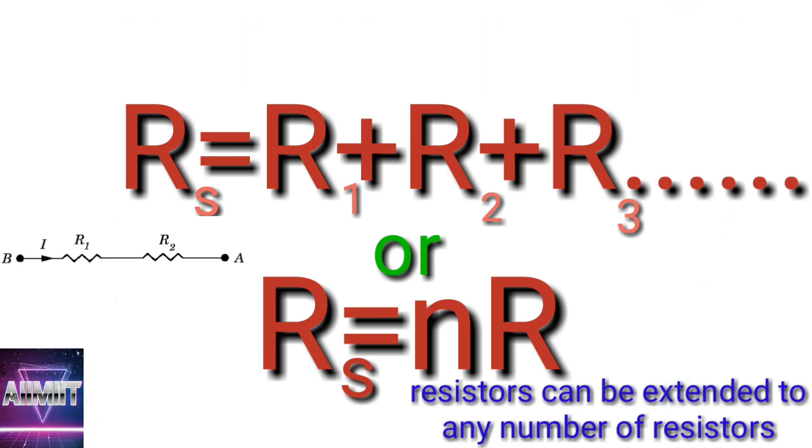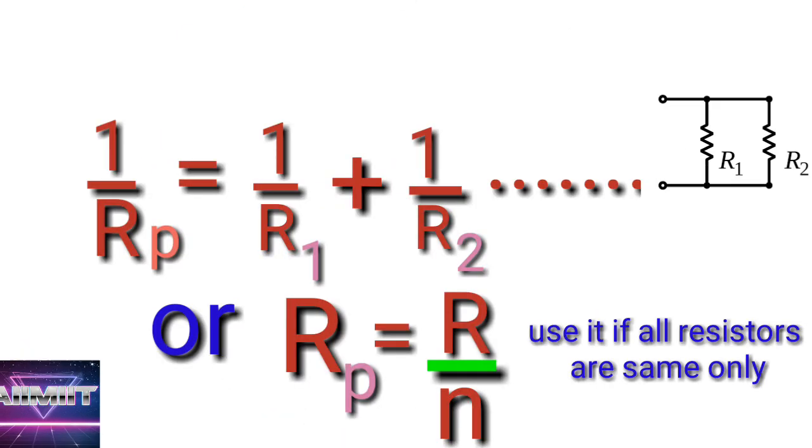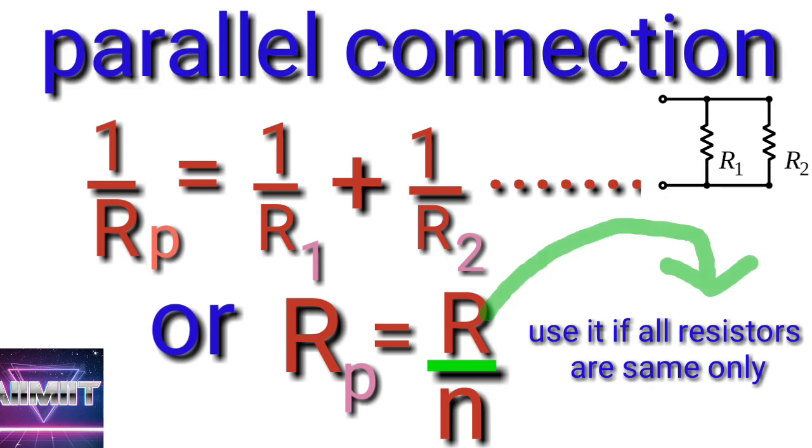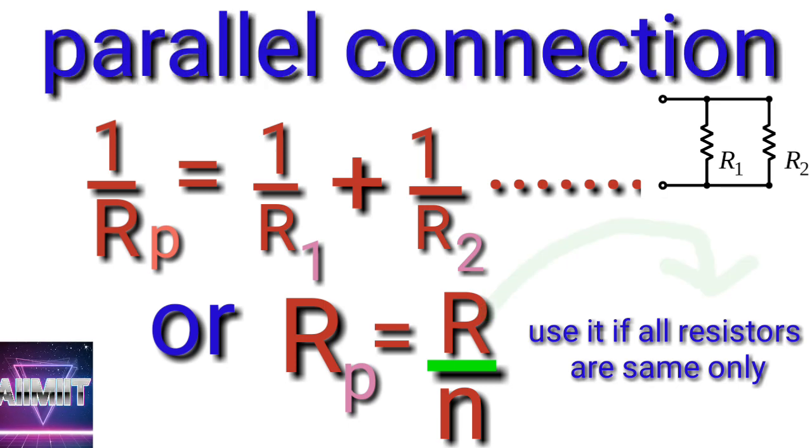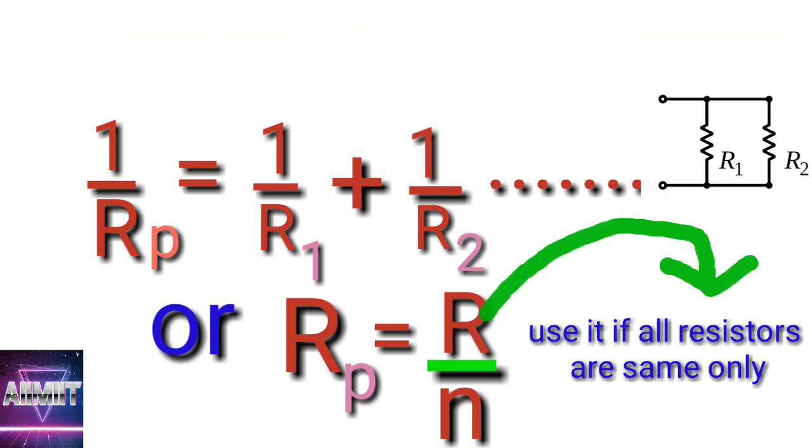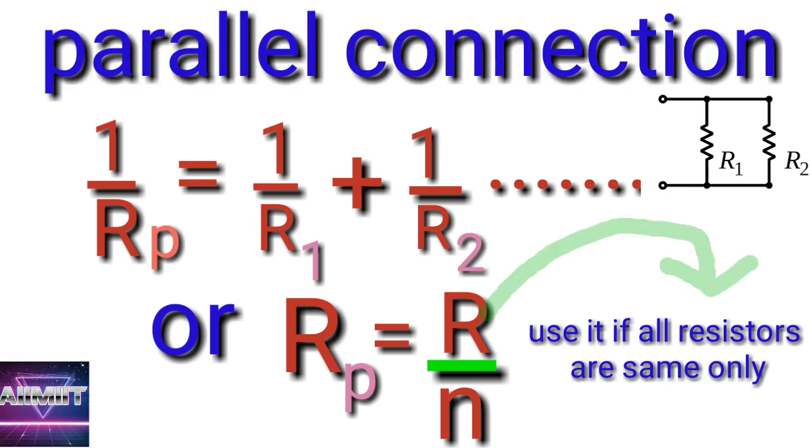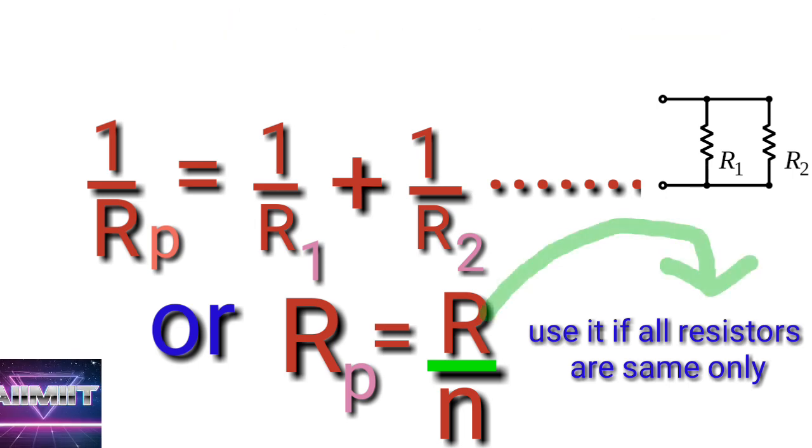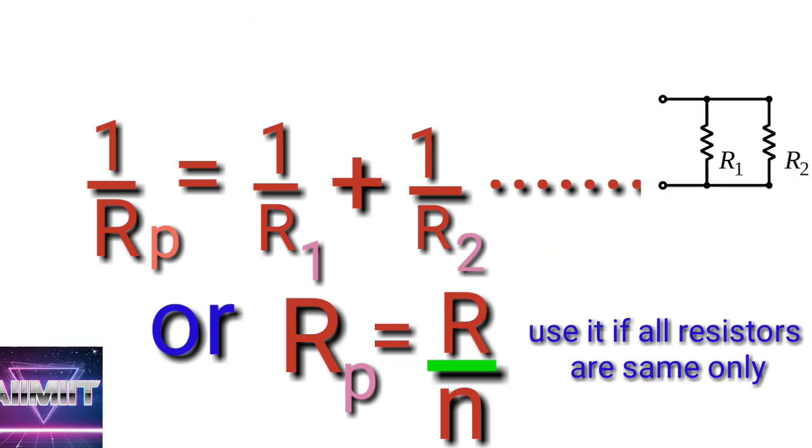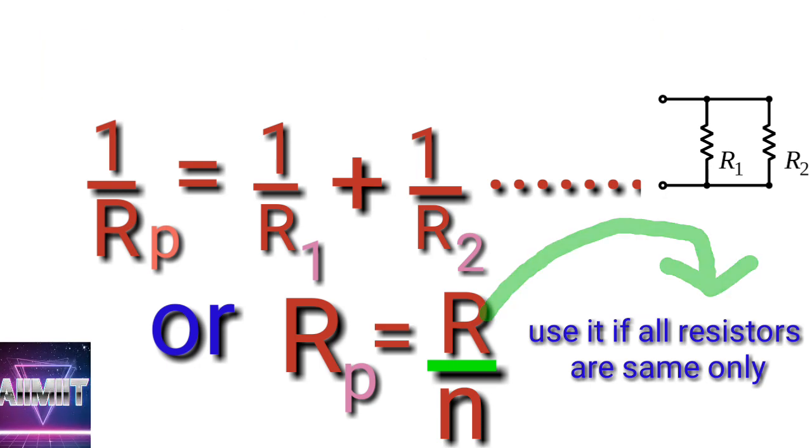Number seven: 1/Rp = 1/R1 + 1/R2 + 1/R3 for resistance in parallel. We can extend this to any number of resistors. If all of them are same, 1/Rp = n/R. Please remember, reverse both cases so it will become Rp = R/n.